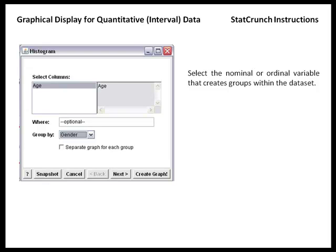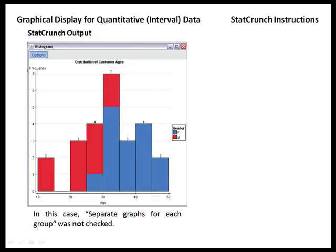If we leave this option unchecked, the output gives us a single histogram which looks just like the histogram we had before, but now things have been color-coded. Our male customers are represented in red while the female customers are represented in blue. With that, we can see that in general the male customers were younger than the female customers.